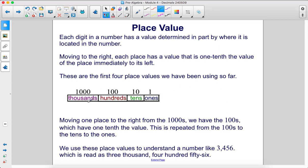Moving one place to the right from the thousands, we have the hundreds, which has one tenth the value. This is repeated from the hundreds to the tens to the ones. We use these place values to understand a number like 3,456.